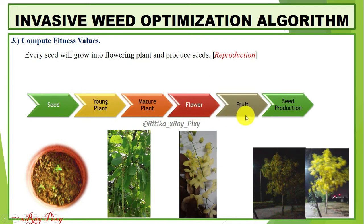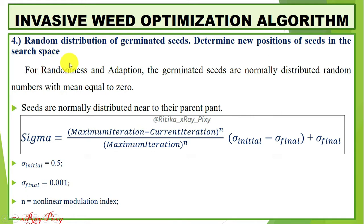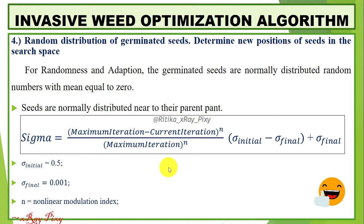Every seed grows through stages: seed, young plant, mature plant, fruit, and seed production. Every seed will grow into a flowering plant and produce more seeds — that is the reproduction phase. After that, we compute the best and worst fitness values among all seeds, since seed production is based on fitness value. The next step is to determine the new position of seeds in the search space, using normally distributed random numbers for randomness and adaptation. Seeds are distributed near their parent plant.